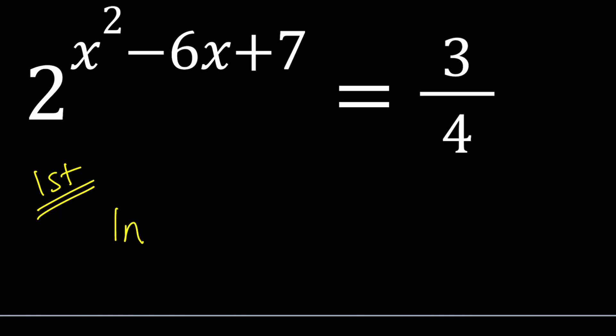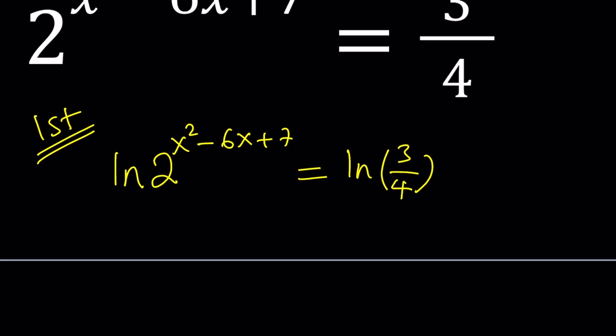So I'm going to ln both sides: ln 2 to the power x squared minus 6x plus 7 equals ln 3 over 4. Now on the left hand side we apply the power rule. When you have log of a to the power b you can write this as b times log a. That's the power rule.